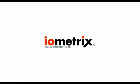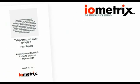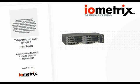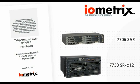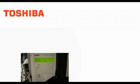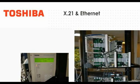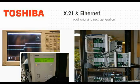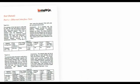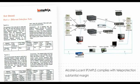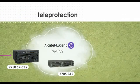Alcatel-Lucent commissioned IOMetrics, an industry-leading network testing authority, to test and validate the ability of the Alcatel-Lucent IP MPLS-based 7705 SAR and 7750 SR products to support teleprotection. The testing was performed using Toshiba current differential relays available in both X21 interface and Ethernet interface respectively, allowing verification for both traditional and new generation teleprotection relays. Based on a comprehensive battery of tests, it was concluded that a network comprised of Alcatel-Lucent IP MPLS routers will comply with all the requirements of teleprotection with substantial margin. The IP MPLS network performed well within the requirements of the teleprotection application that has, to this point, only been supported by TDM networks.